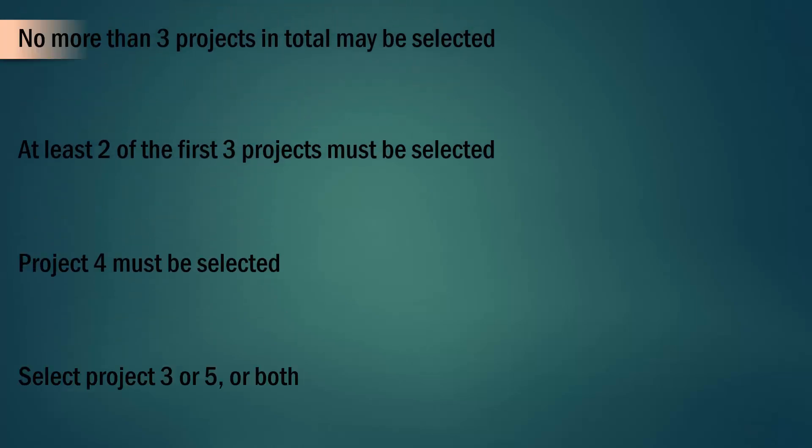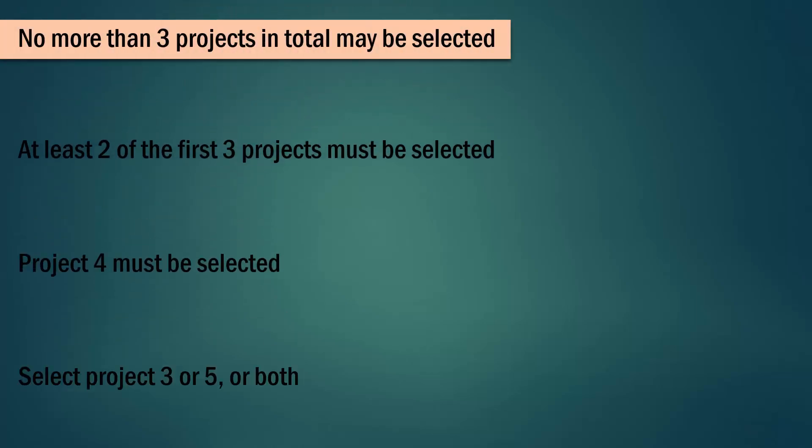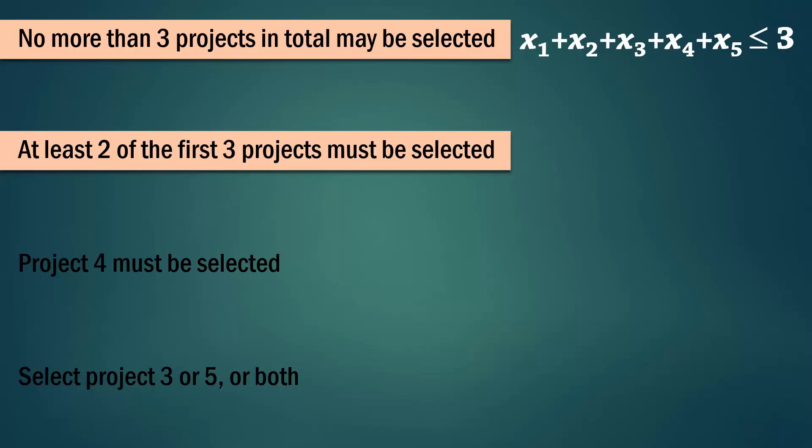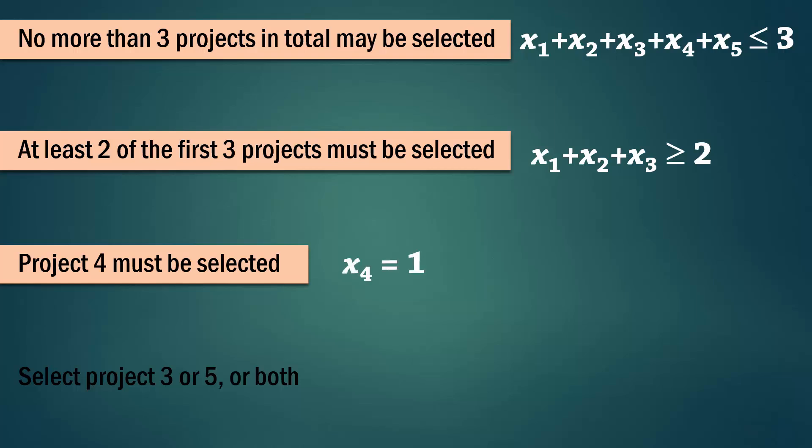Let's examine more. No more than 3 projects in total may be selected. So x1 plus x2 up to x5 has to be less than or equal to 3. At least 2 of the first 3 projects must be selected. And for that, x1 plus x2 plus x3 has to be greater or equal to 2. Project 4 must be selected. This simply means that x4 equals 1. Select projects 3 or 5 or both. In other words, select at least one of projects 3 and 5.